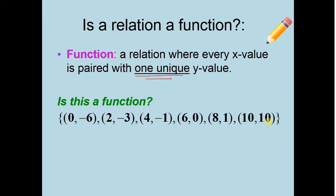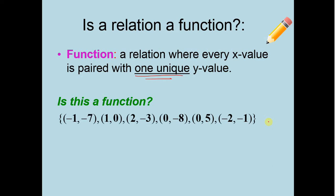So, let's look at this problem. Negative 1 maps to negative 7, 1 is to 0, 2 is to negative 3, 0 is to negative 8, 0 is to 5, negative 2 is to negative 1. But wait, hold on. Notice we have two zeros here for x's. Do they have the same y value? I don't think so. Negative 8 is not related to 5. This one's a no. This is not a function because one x value is going to two different y's. That can't happen.